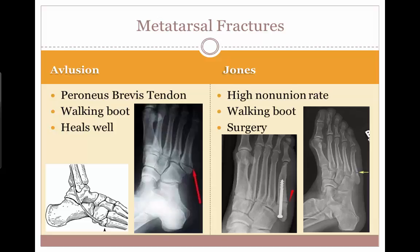An avulsion fracture happens when the tendon from the peroneus brevis rips off a portion of the base of the fifth metatarsal, sometimes called the styloid process. The patient is placed in a walking boot for immobilization and protection, and this injury tends to heal well. In a Jones fracture, the bone fractures at the neck of the fifth metatarsal. This area is not well vascularized and has a high non-union rate, so the patient is placed in a walking boot after surgical fixation of the bone is performed.